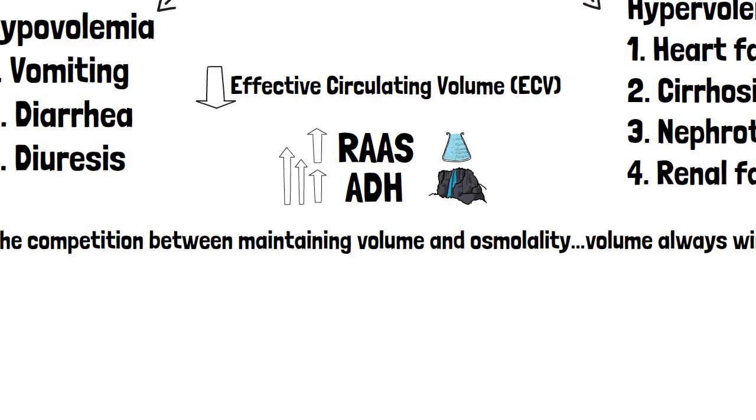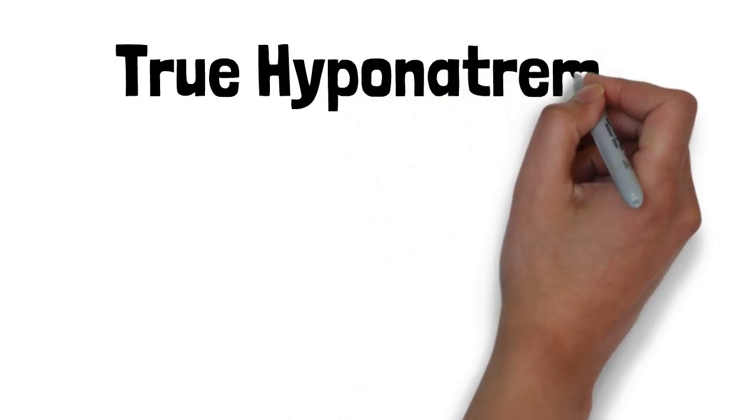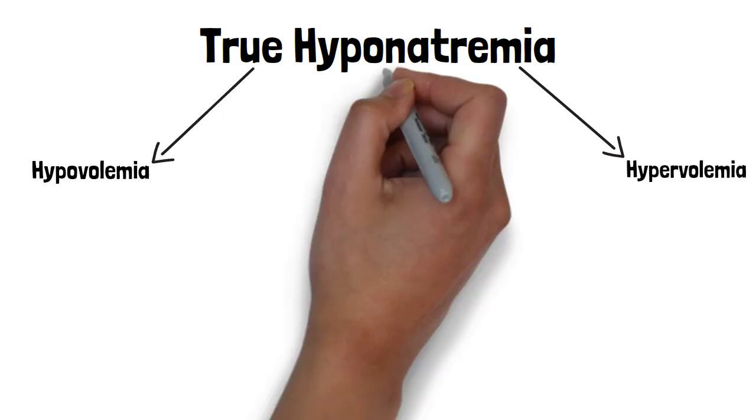So again, revisiting volume state with true hyponatremia, we've covered what happens in someone who's hypovolemic and hypervolemic. So let's cover what happens in euvolemia.